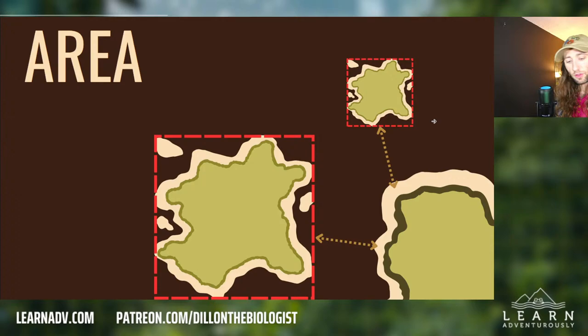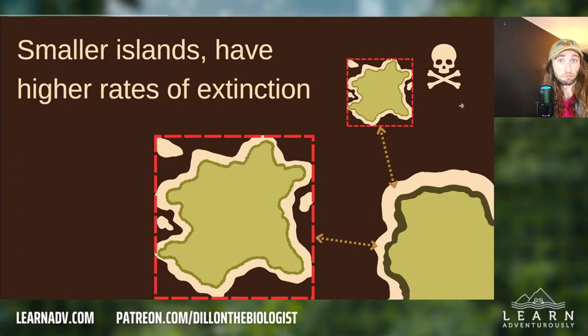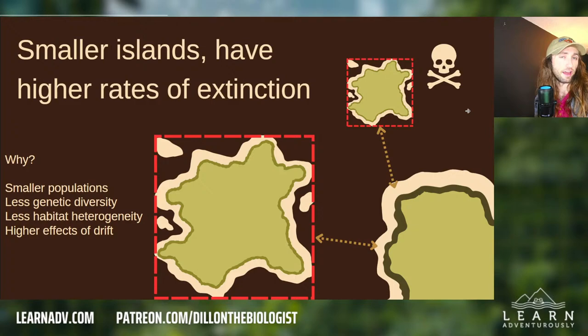Area is the other component of island biogeography. While isolation relates to distance from the mainland or connectivity to other islands, area refers to the physical square area of the island itself. In general, smaller islands have higher rates of extinction and larger islands have lower rates of extinction.